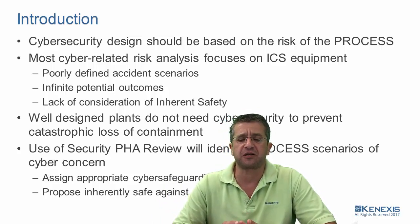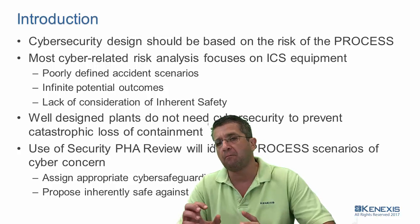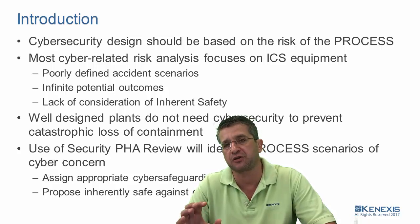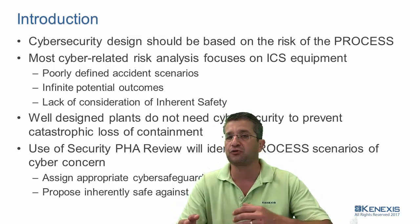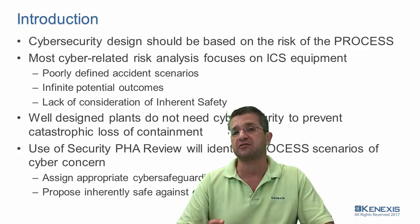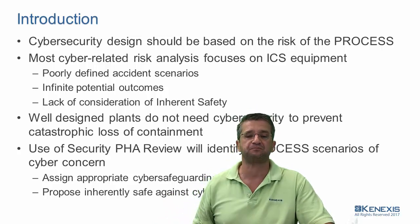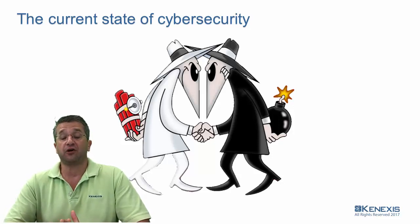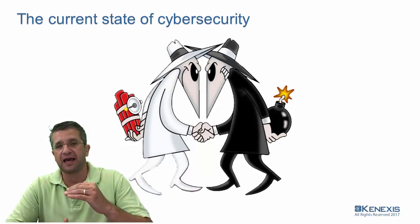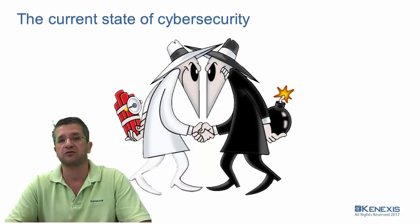When we use a SPUR — a Security PHA Review — that's going to help us identify what process scenarios a cyber attack might be able to take advantage of to cause a loss of containment. When we identify those scenarios, we want to make sure we've either assigned the appropriate amount of cyber safeguarding through an IEC 62443 security level, or we can make the plant inherently safe against cyber attack by proposing mechanical safeguards. The HSE groups, the safety groups, and the process groups need to be involved to make sure cyber attacks can't cause loss of containment events.